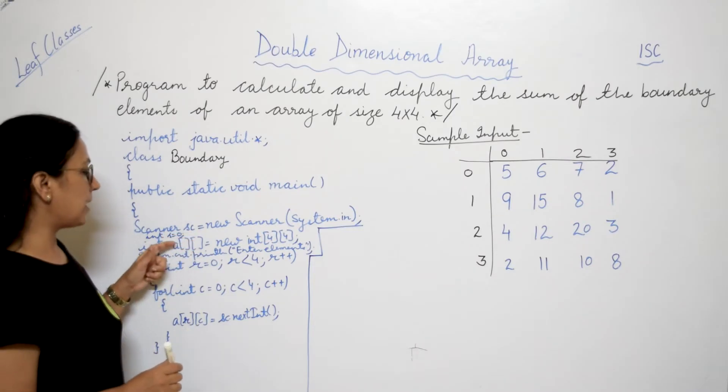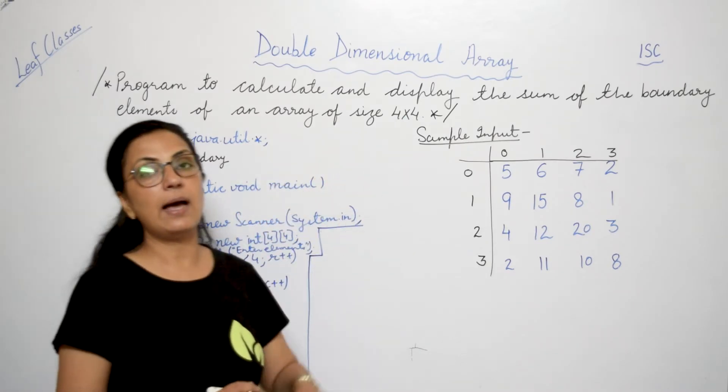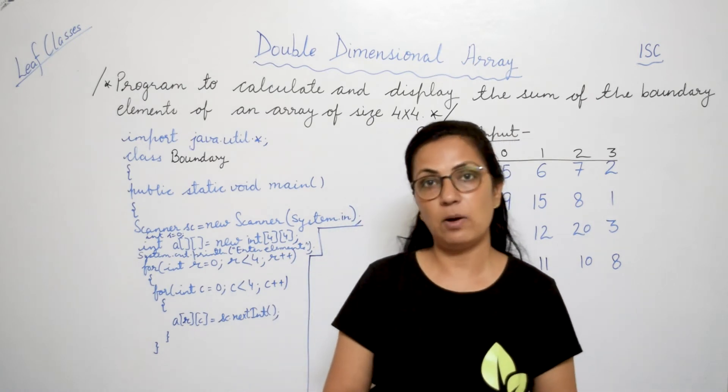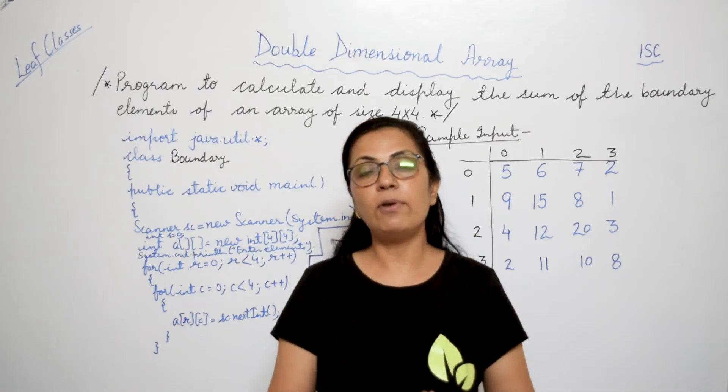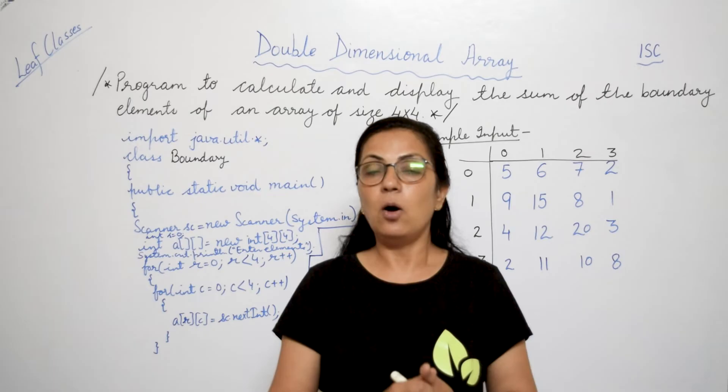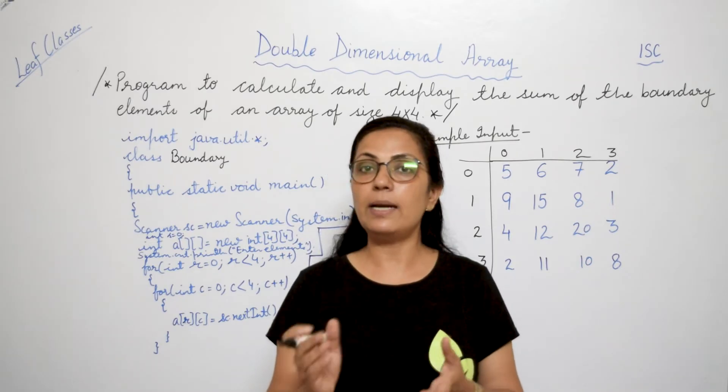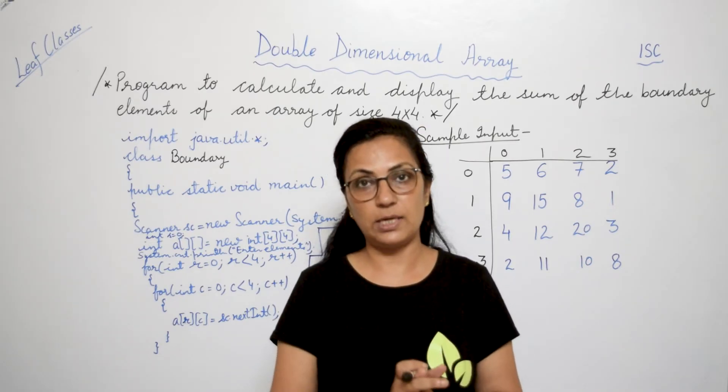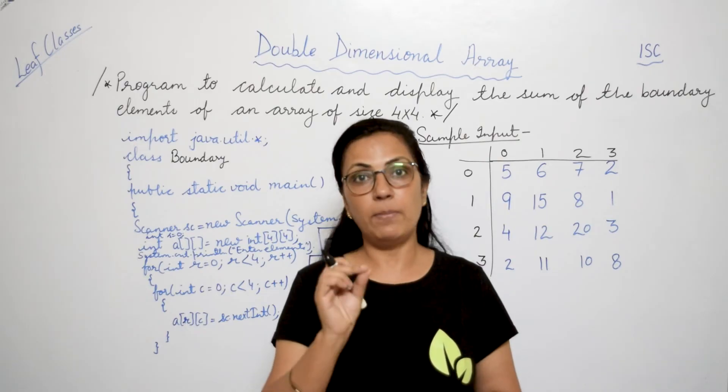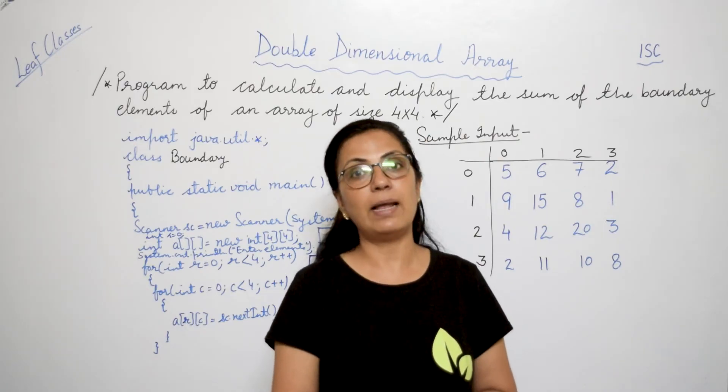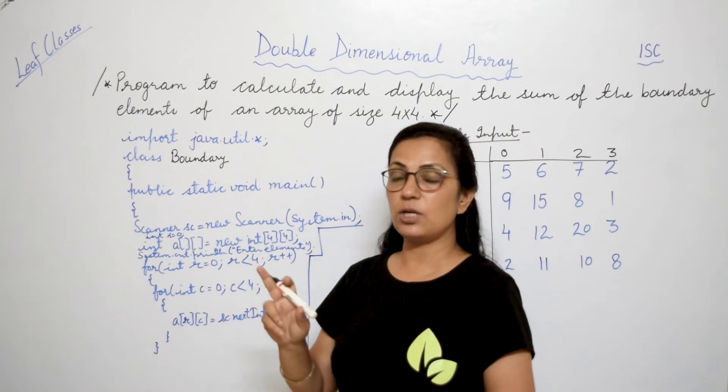Then we have created the scanner object and I have taken int s equals to 0. Why? Because my question says we have to calculate the sum of the boundary elements. And children, here I would like to tell you once again that whenever we want to calculate the sum, always the variable will be initialized by 0 because 0 is additive identity. And when you add 0 to any number, the value of the number will not change. Similarly, if you want to find the product, then it has to be initialized by 1. Why? Because 1 is multiplicative identity and the value of the number will not change if you multiply any number by 1. So don't miss this. Don't miss the initialization part.